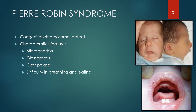Pierre Robin sequence is a chromosomal defect characterized by macrognathia, glossoptosis — the tongue is retracted to the back of the pharynx — and cleft palate. The child has difficulty breathing and eating. The mandible is hypoplastic, leading to micrognathia. You should be able to identify these children with reasonable confidence and make an appropriate referral to the physician.